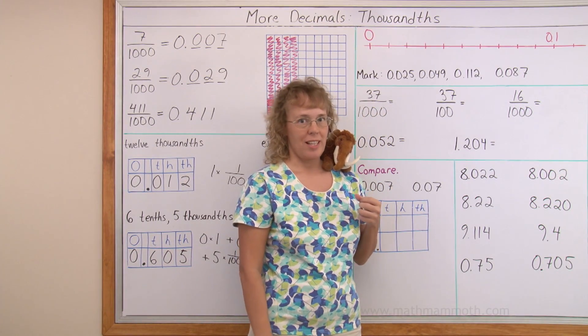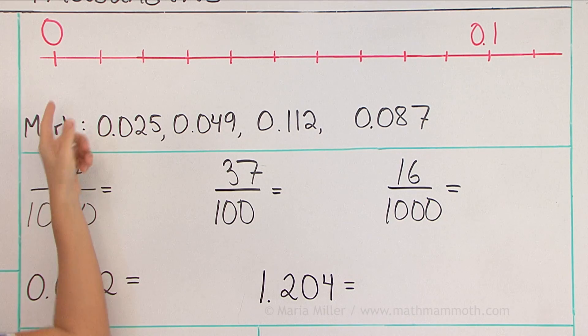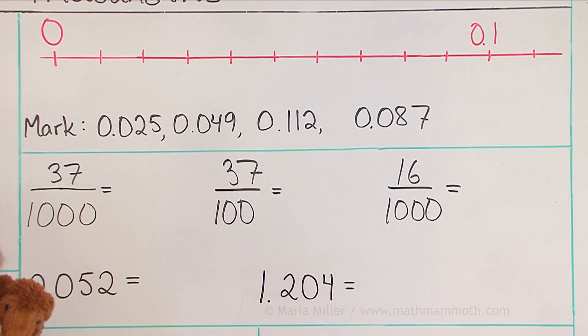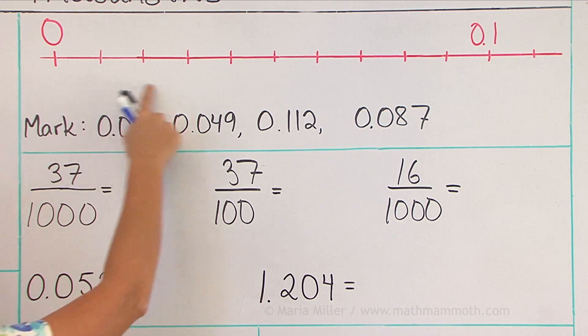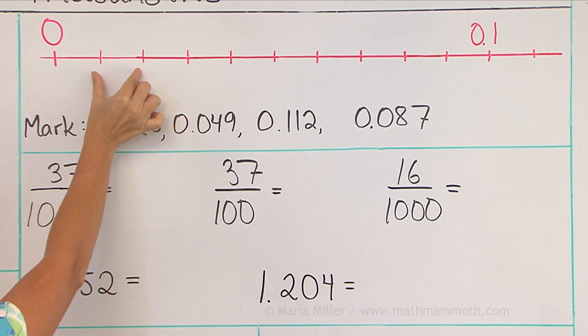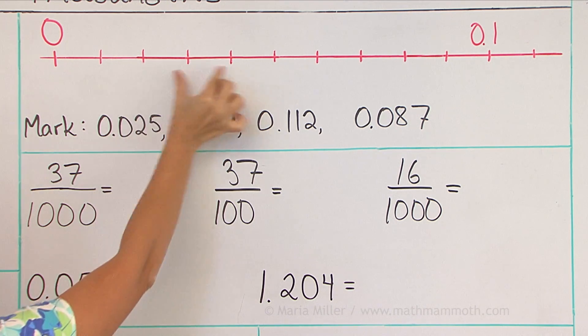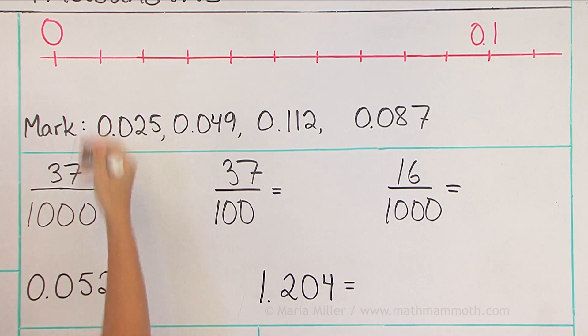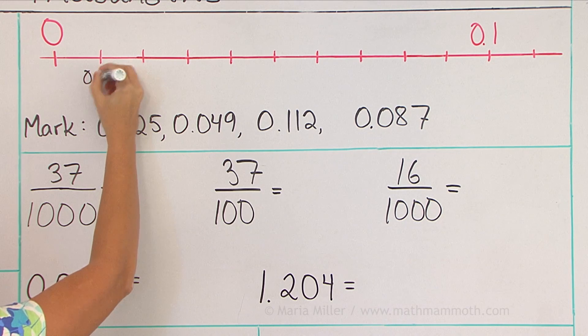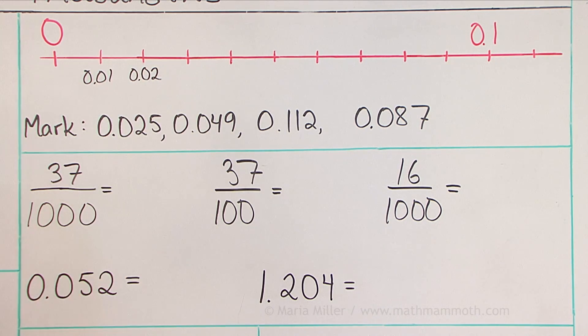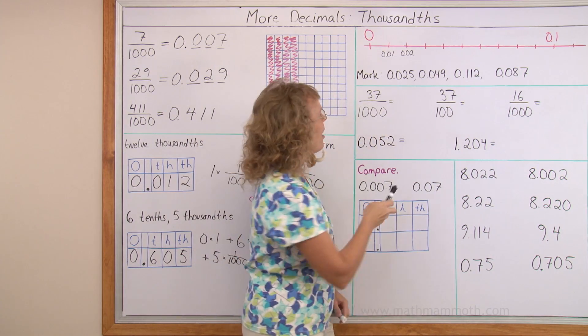Next, we are going to look at a number line. This one goes from zero to 0.1 or one-tenth. And it is divided into ten parts. So therefore, each part is how long or how much? It's one-tenth divided into ten parts. So each one of these is one-hundredth. Let me mark it here. This would be one-hundredth and this would be two-hundredths and so on. And now we're going to mark these numbers on the number line.